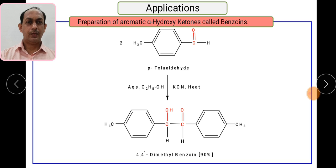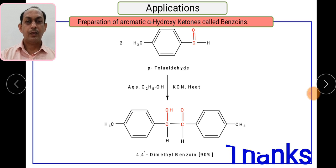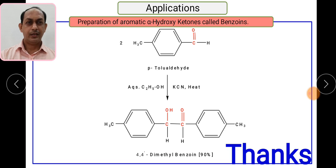You have definitely understood what benzoin condensation is, which molecules give benzoin condensation and which do not, what nucleophile is used, and the mechanism behind it. These alpha hydroxy ketone compounds have very good utility in preparing different subsequent chemical entities. Try to write the mechanism of benzoin condensation and also one of its applications. Thank you, see you in the next session.